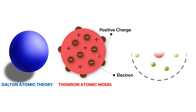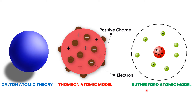However, in 1911, Rutherford performed a gold foil experiment and observed very different results. He said that atoms consist of a center, and this center is known as the nucleus, and the nucleus is positively charged. Whereas electrons are present somewhere around the nucleus — they are not inside the nucleus but somewhere outside the nucleus of an atom.